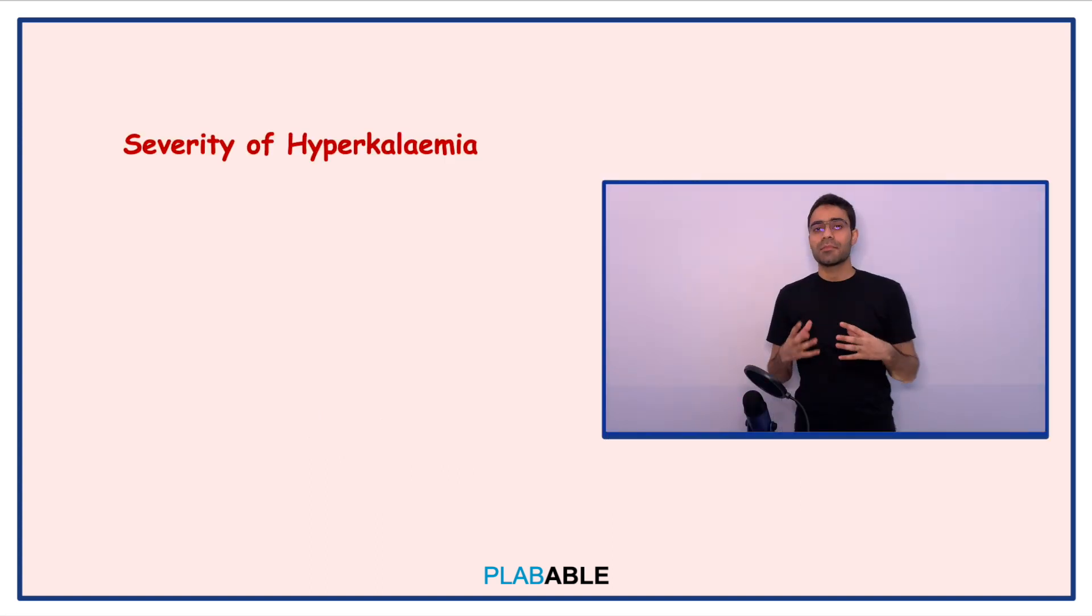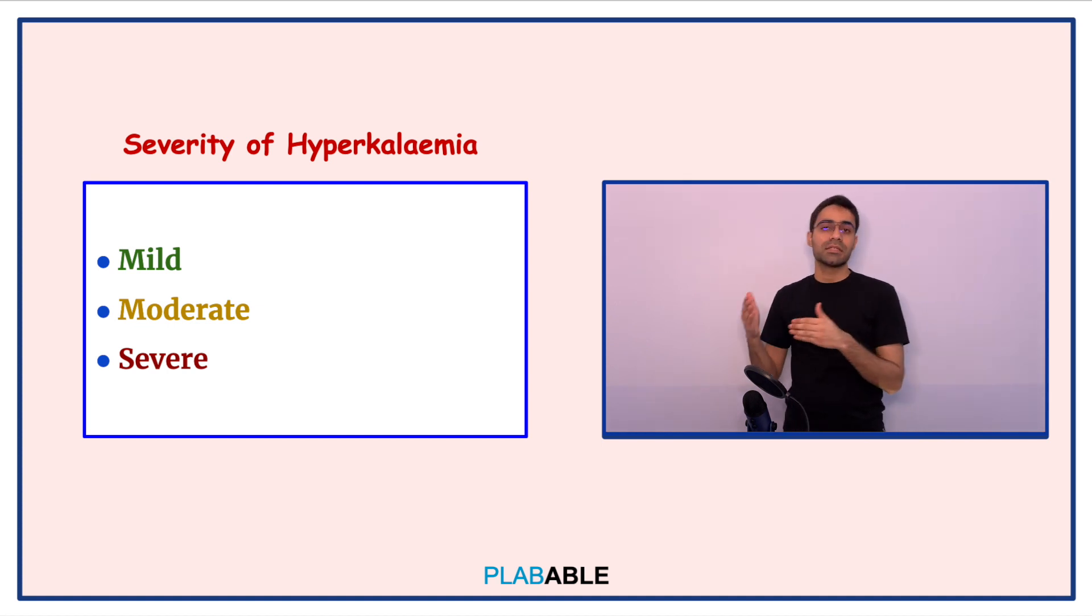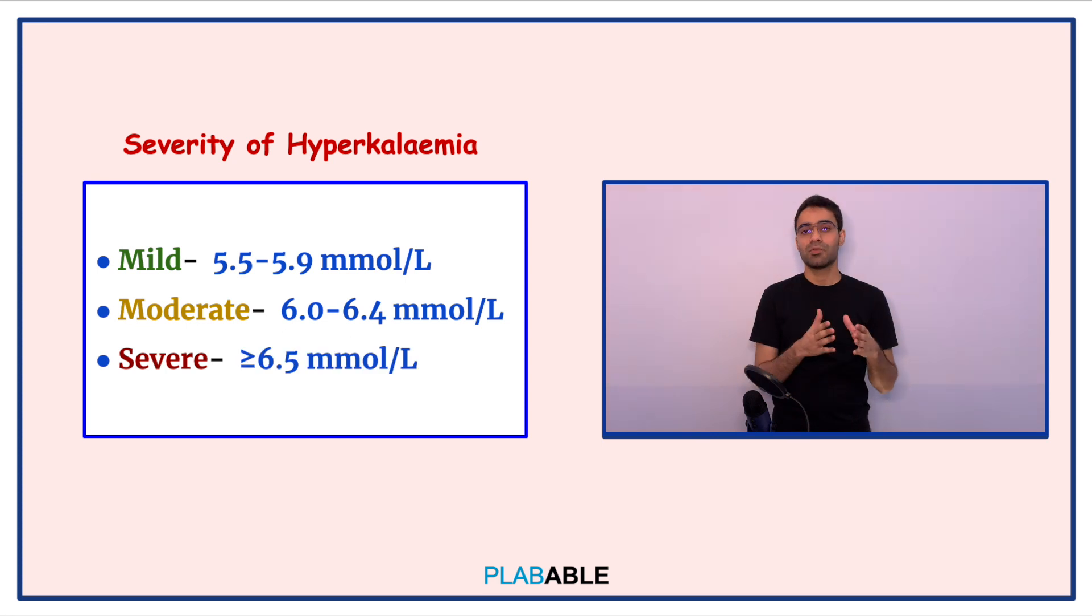We can divide hyperkalemia into mild, moderate and severe. Mild is when the potassium level is between 5.5 to 5.9 millimoles per liter. Moderate is when it's between 6 to 6.4 and severe is 6.5 or more.